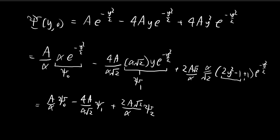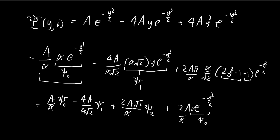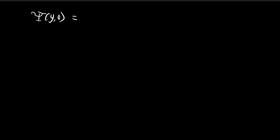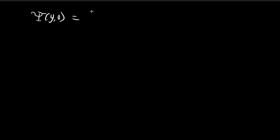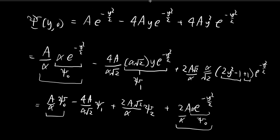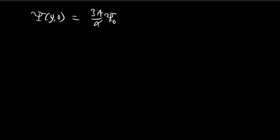Pulling out the +1 term gives 2a · e^(−y²/2). Dividing by α and multiplying by α, this equals a contribution of (2a/α) · ψ₀. Combining this ψ₀ contribution with the earlier (a/α) · ψ₀ term gives 3a/α · ψ₀ as the first term of the expanded wave function.